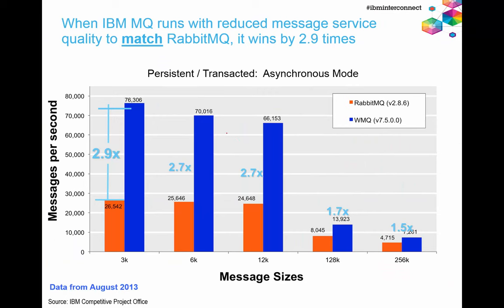In 2013, another group in IBM did a performance benchmark of the older version of MQ (7.5) compared to RabbitMQ. When configured for similar quality of service, they found that MQ was up to 3 times faster than RabbitMQ for messages ranging from 3 KB up to 256 KB — quite a significant performance difference. In that test it was persistent, transacted, but in asynchronous mode — the best that you can get with RabbitMQ, since RabbitMQ does not support XA transactions and does not provide synchronous fully persisted transactional messages, at least as of 2013.